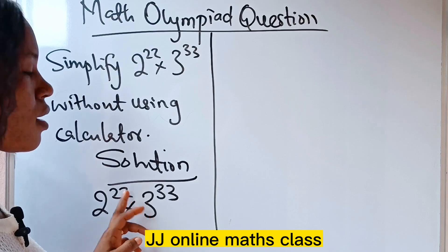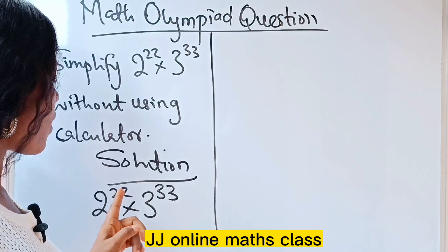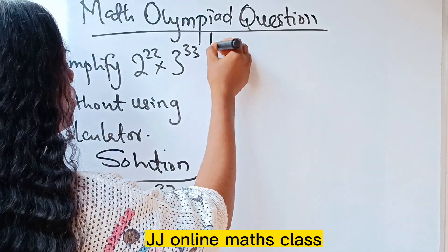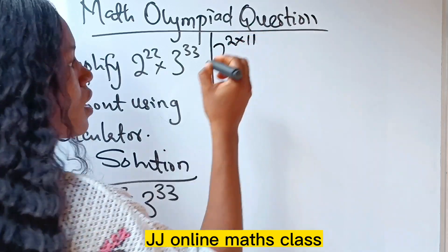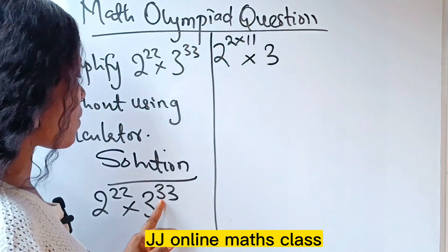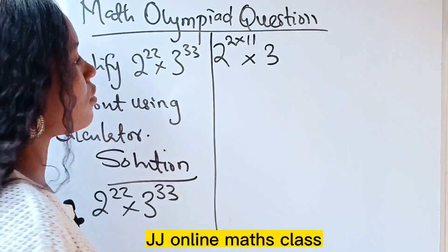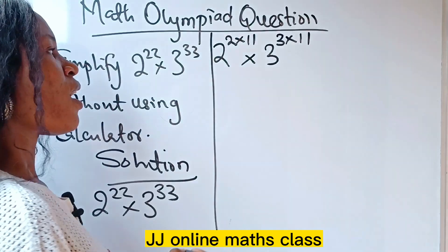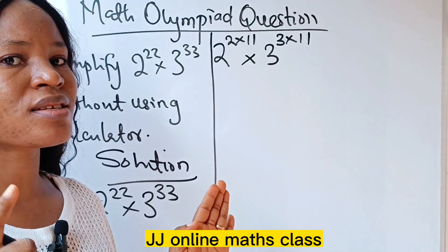First, we are going to split the powers. The power 22 can be written as 2 times 11. So we have 2 raised to the power of 2×11, times 3 raised to the power of 3 times 11.